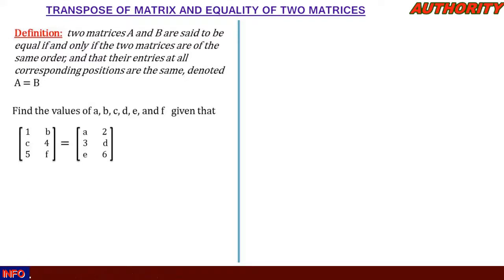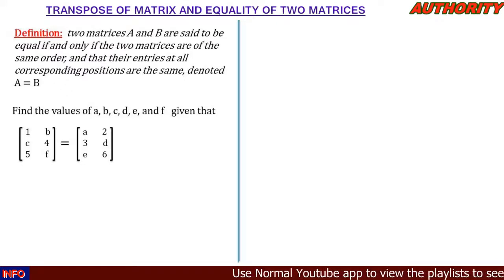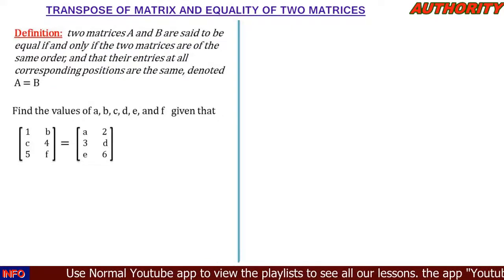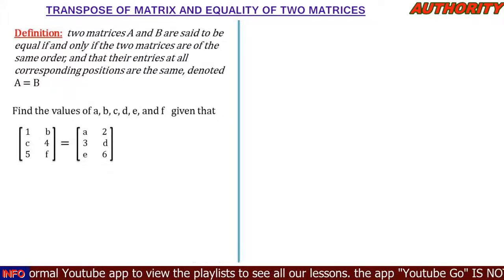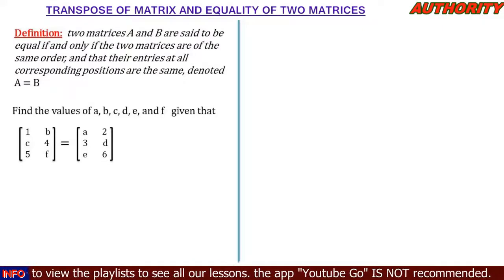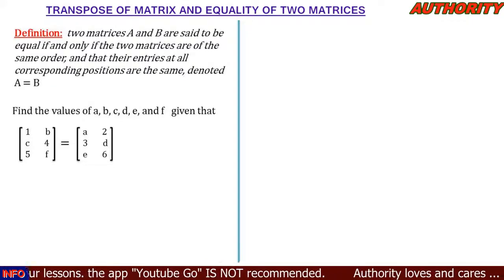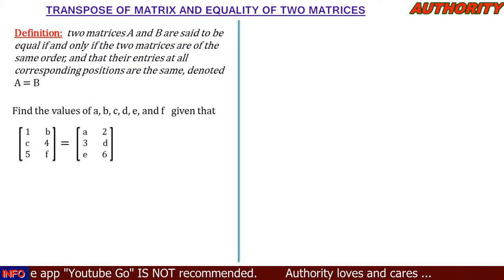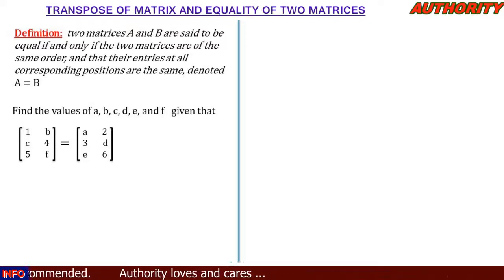The first condition to show that these two matrices are equal is that they must have the same order. This matrix is 3×2, and the second is also 3×2. So the first condition is met.